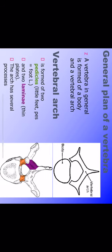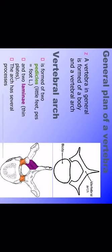A vertebra is composed of a body and a neural arch. The neural arch is composed of two pedicles and two laminae on each side, fused together. We also have one posterior spinous process and two laterally located transverse processes. This is the general plan of the vertebra.